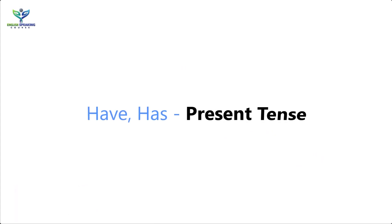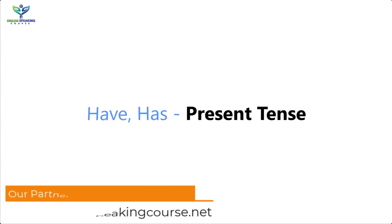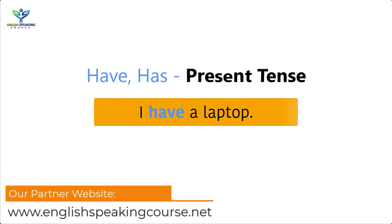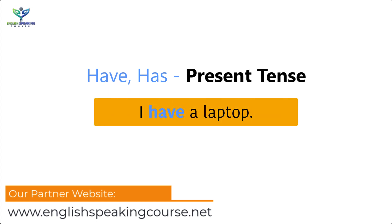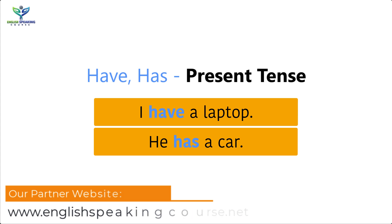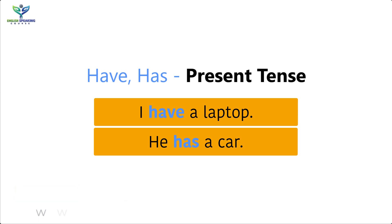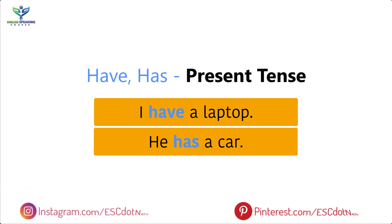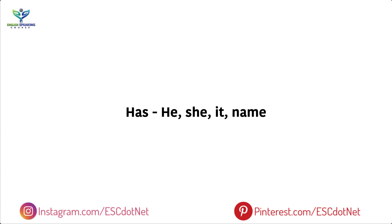First of all, we should know: we use 'have' or 'has' in the present tense. As we say, 'I have a laptop' or 'he has a car.' We use 'have' or 'has' according to person to say we have some possessions. 'Has' is used with he, she, it, or a name.